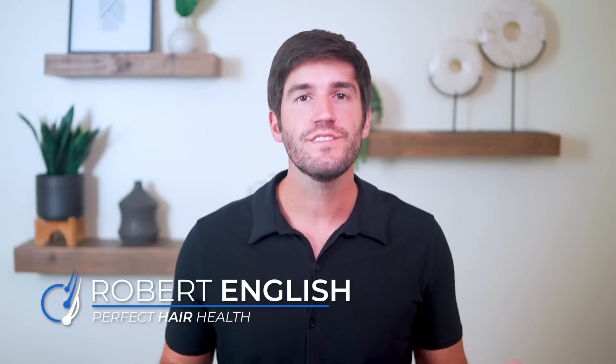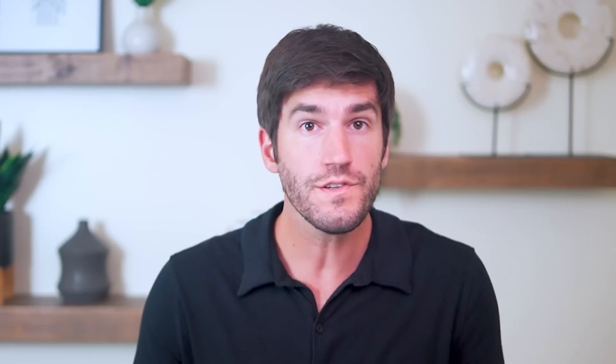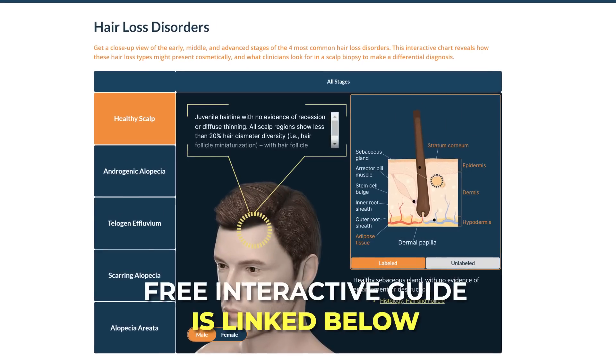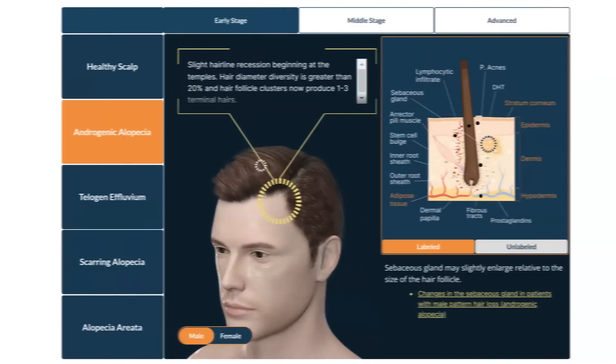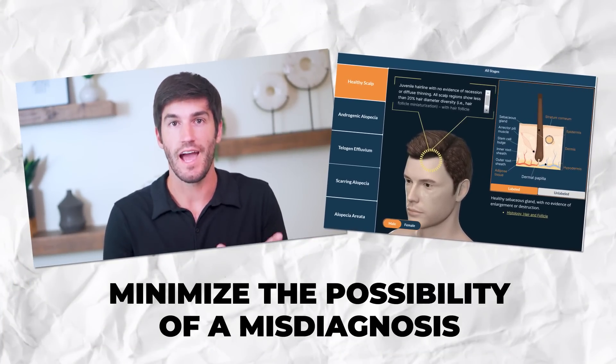This is Rob from Perfect Hair Health. In this video, we are going to dive into the four major kinds of hair loss. These kinds constitute about 95% of all hair loss diagnoses, and we're going to cover their presentations, their prevalence, and their suspected causes. We'll also give you something for free that we've worked really hard to build. The reason we built this is to show you just how similar some hair loss types can look, especially at their earliest stages, and why so many misdiagnoses actually happen — which delays people from getting the best treatments and worsens their hair growth outcomes.